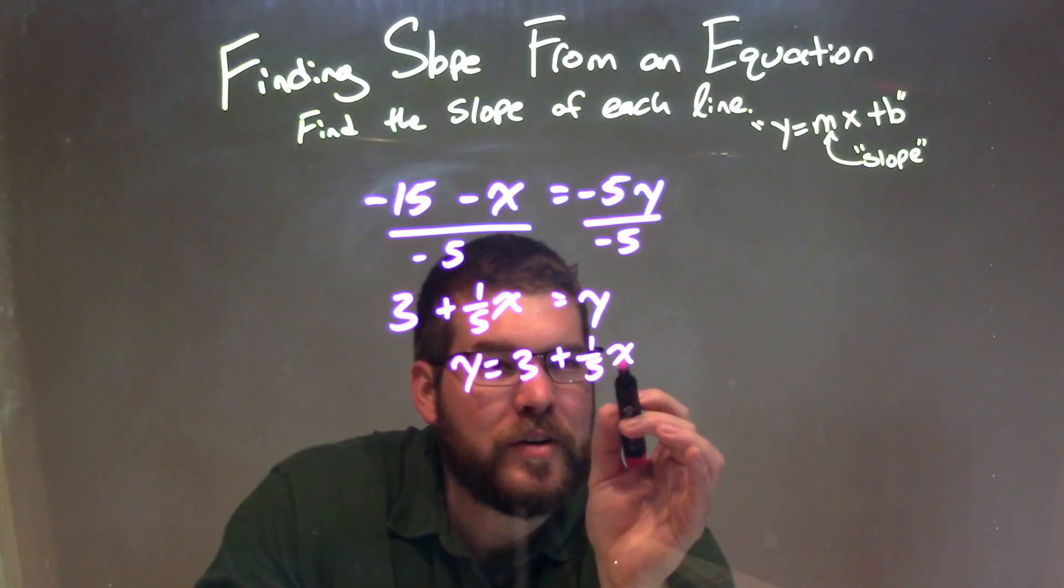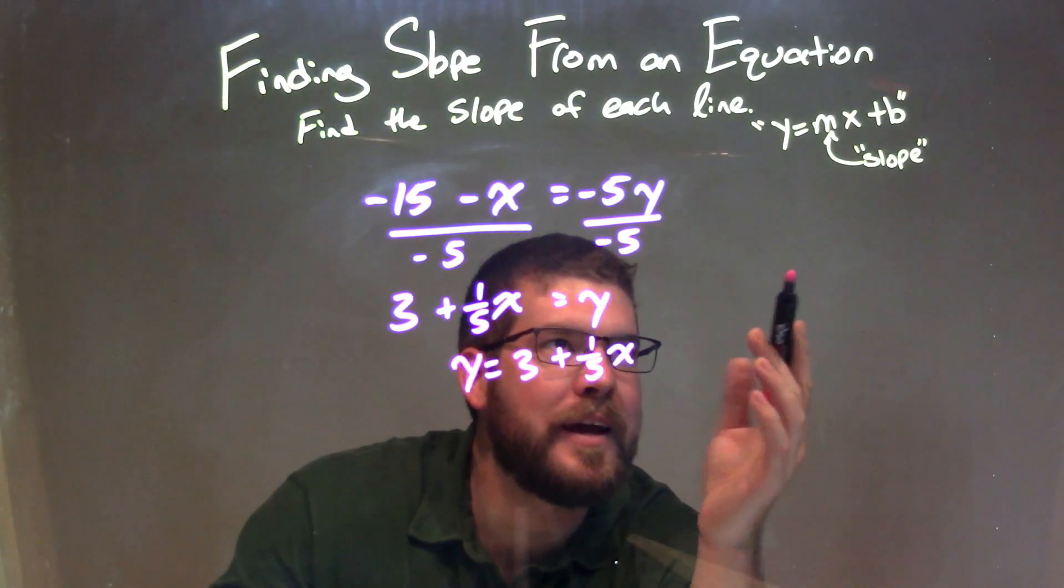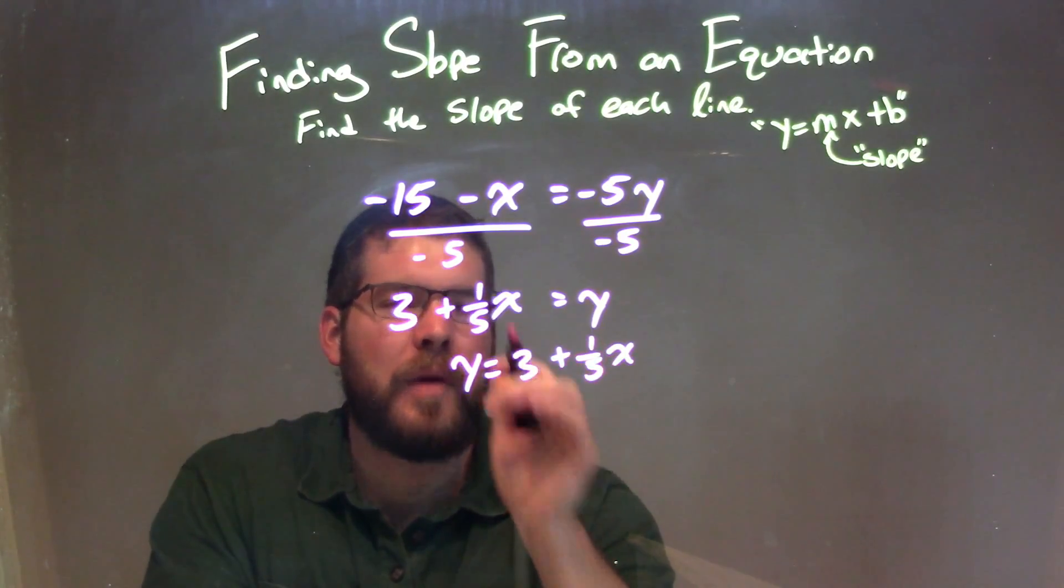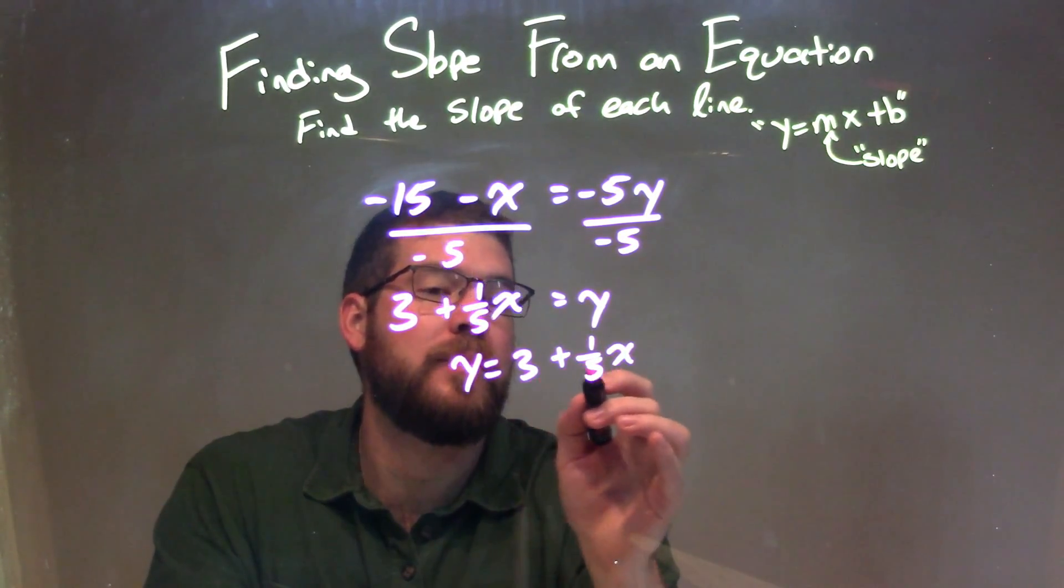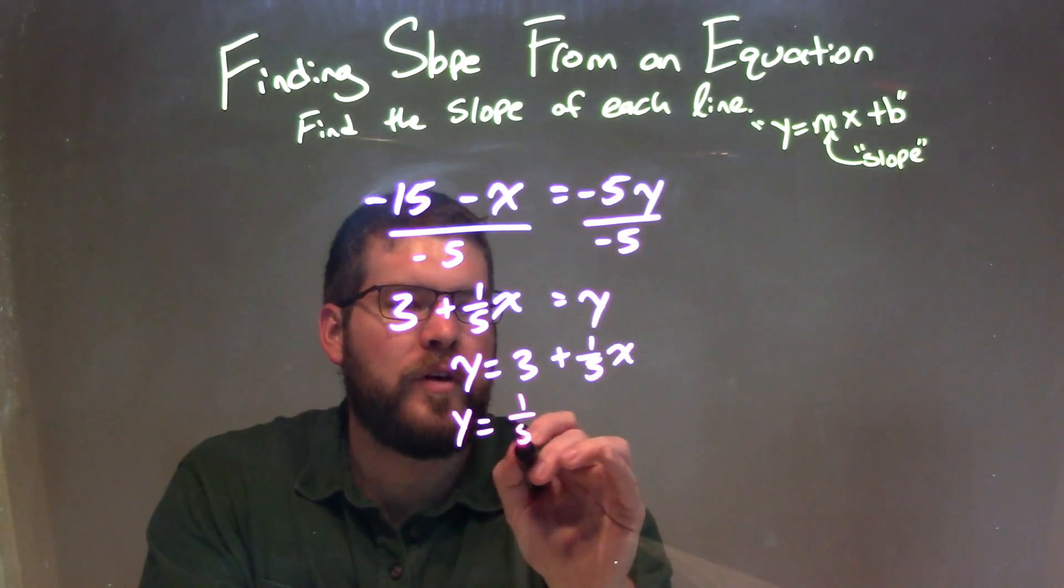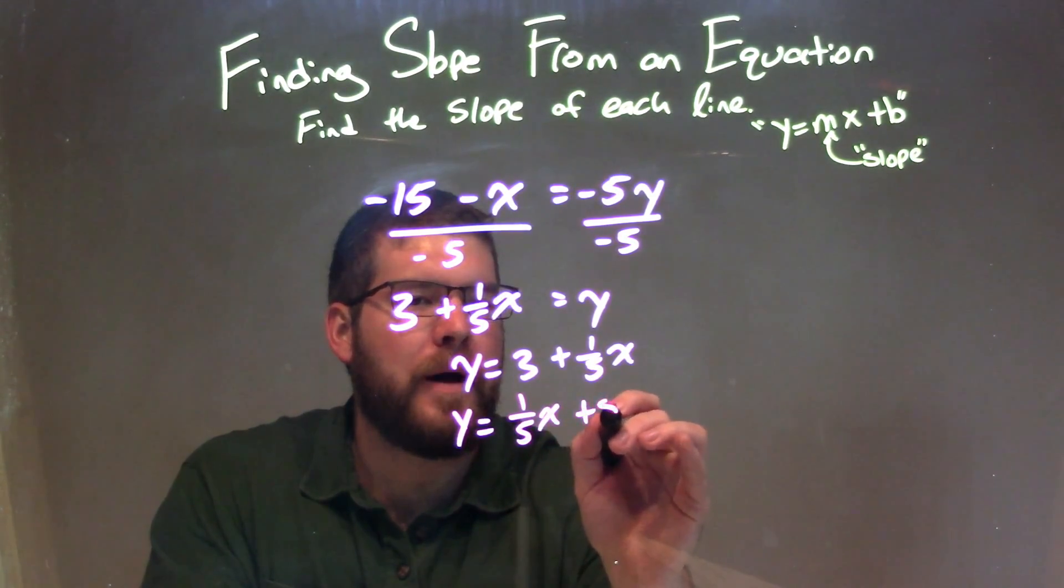The coefficient in front of x is our slope. It's not really exactly mx plus b, but we can rearrange it. Right now, it looks like y equals b plus mx. But I can rearrange it, saying y equals one-fifth x plus 3.